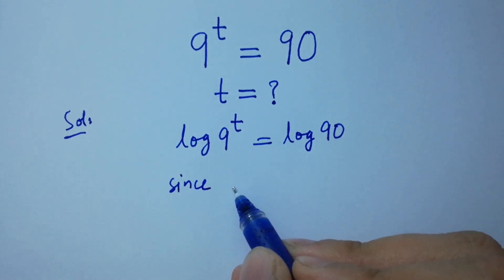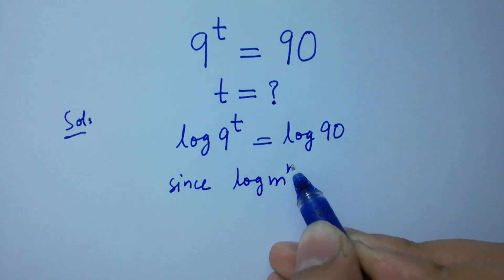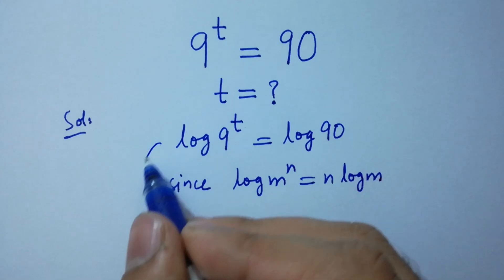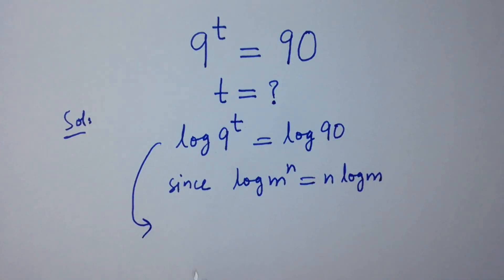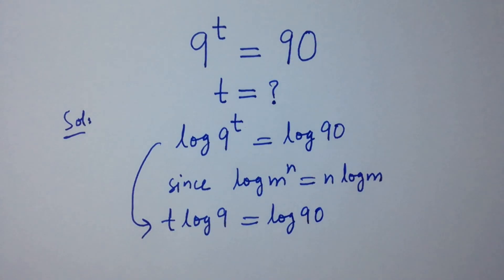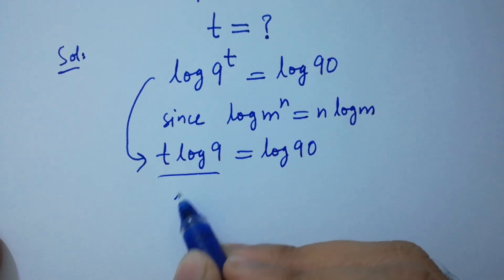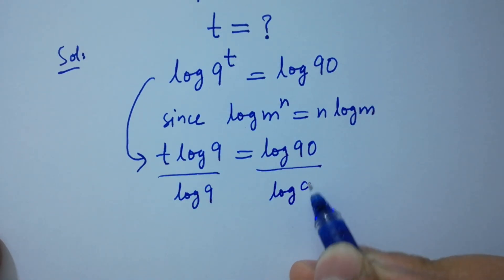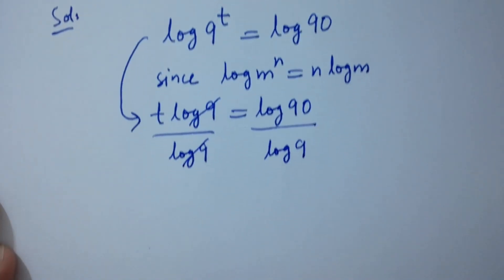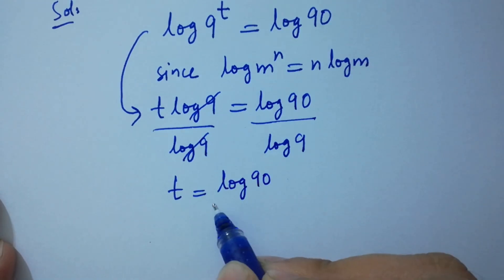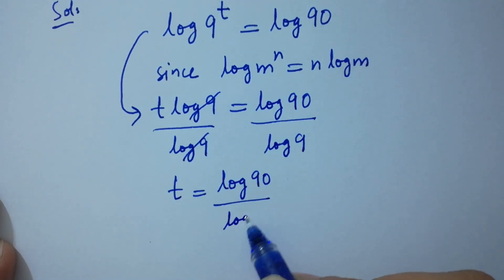Since log m to the power n equals n log m, it will be t log 9 equals log 90. Divide by log 9 on both sides. Log 9 and log 9 cancel, so t equals log 90 over log 9.